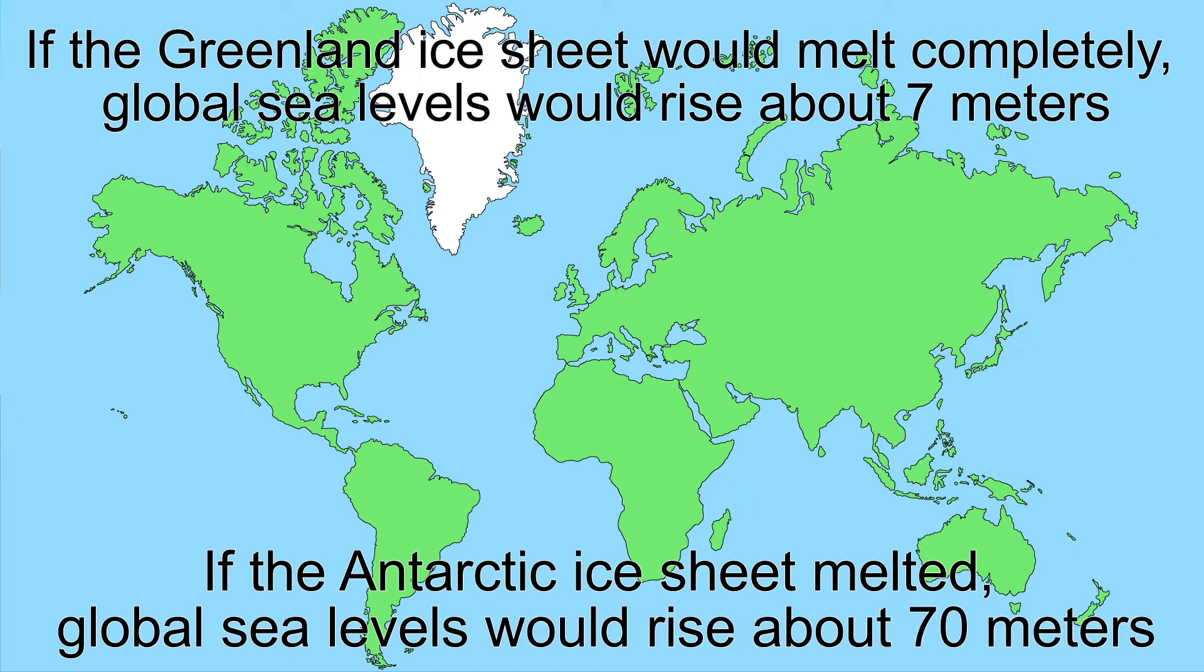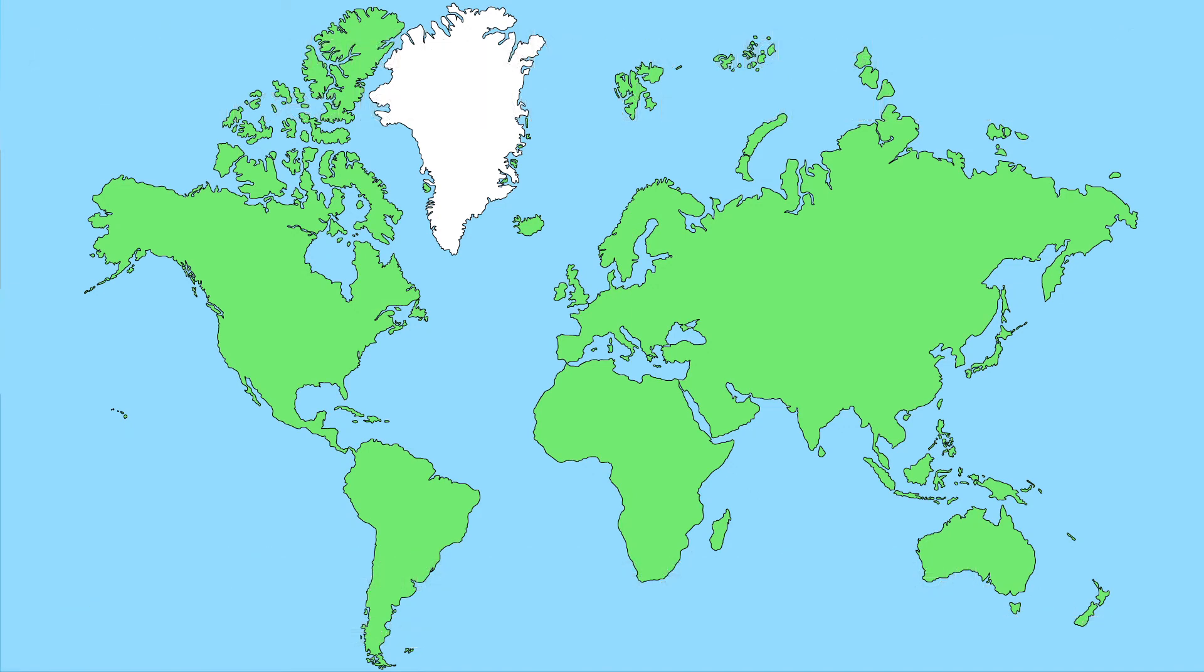But if the Antarctic ice sheet melted, global sea levels would rise about 70 meters. However, it is unlikely that the entire Antarctic ice sheet will melt completely.